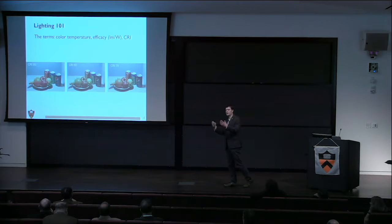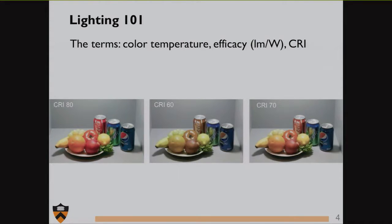Finally we have the color rendering index. That's basically how well this light source can render all the different colors in our room, clothing, fruit, soda cans. A very poor light source, like a fluorescent tube or sodium discharge lamp in parking lots, cannot render colors very well. When you go to a better luminaire, like an incandescent or good solid state lighting, you can see we can render these colors quite well. That's lighting 101.